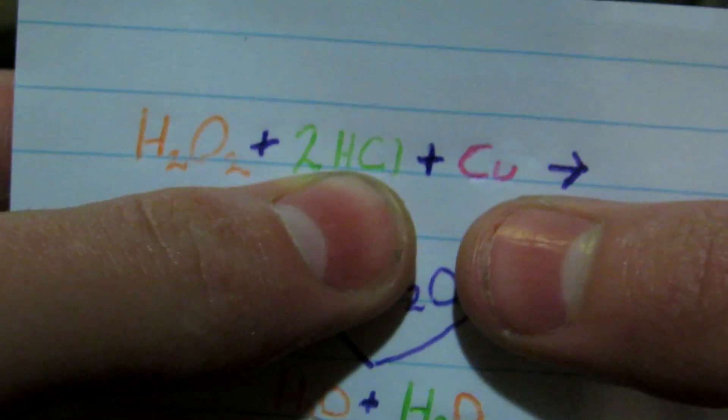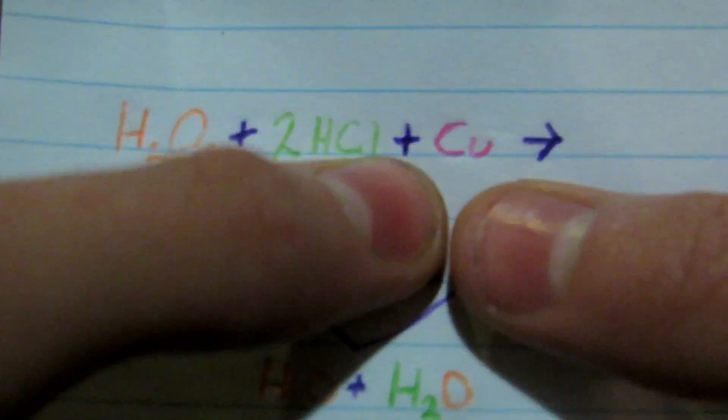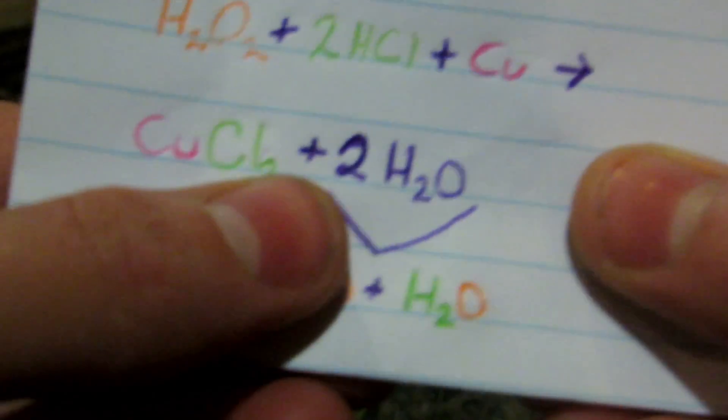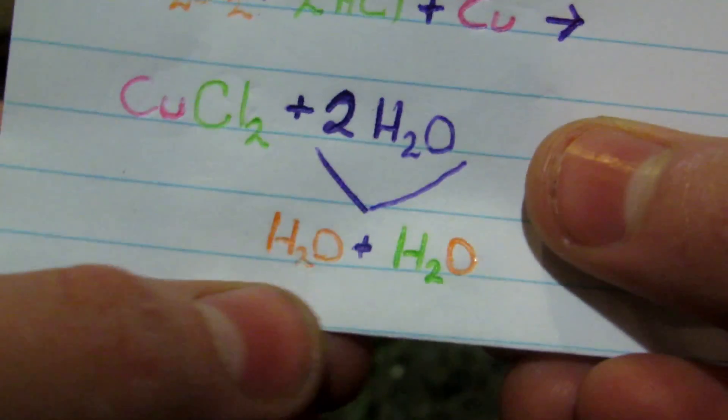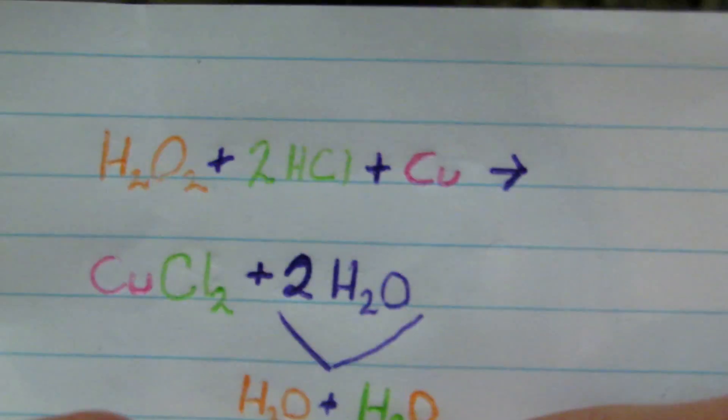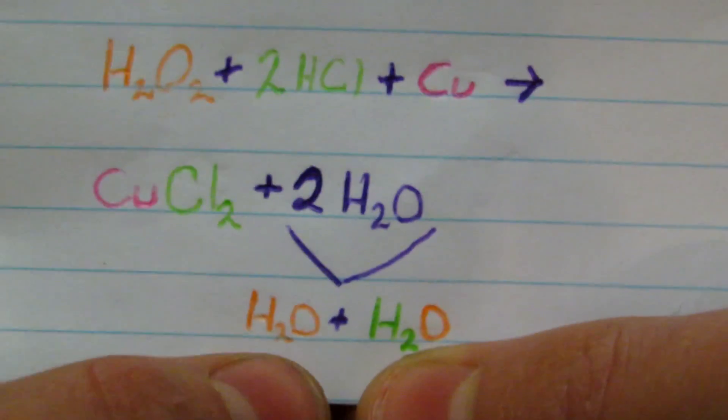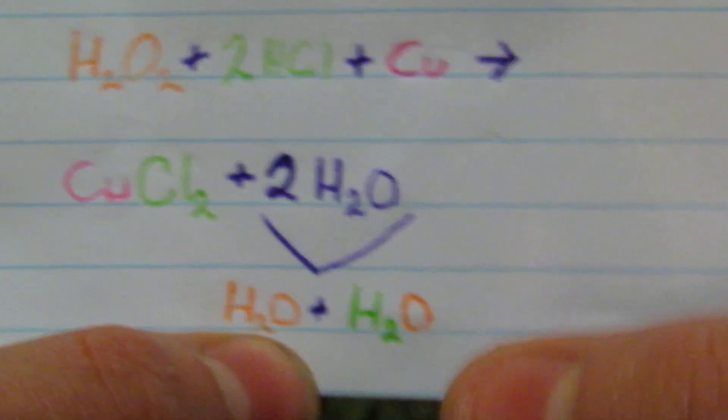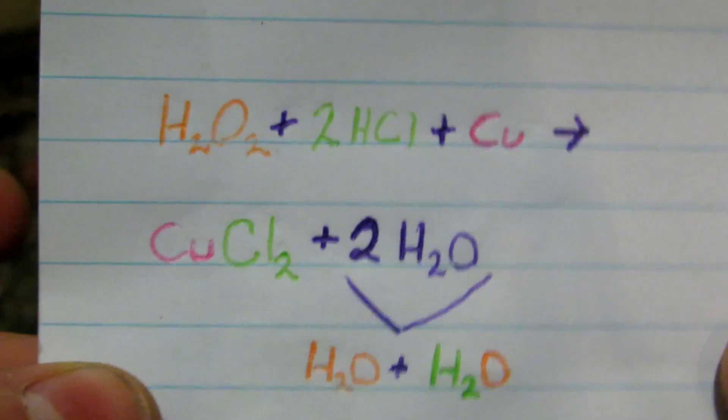You can see the beautiful green color of copper chloride slowly being produced. This reaction should be done in about a day. The reaction is: hydrogen peroxide reacts with two hydrochloric acid molecules and copper metal to form copper chloride and two waters. I've broken this down to show exactly where the chemicals are coming from and where the two waters originate. That's basically the reaction that's happening.